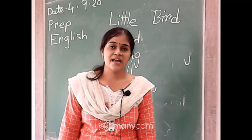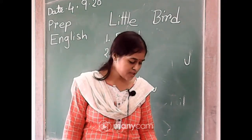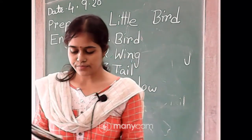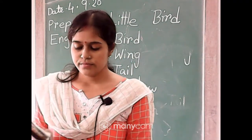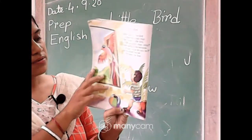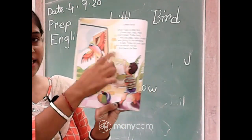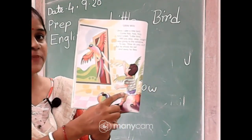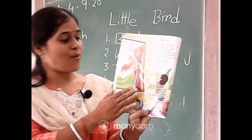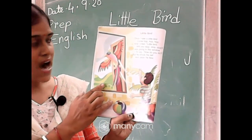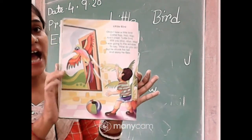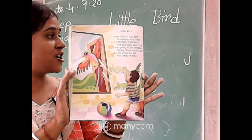The bird flew away. Okay — you learn this rhyme. Now you just tell me the objects that you can see or identify from this picture. Write down on the chat box, one by one, the objects that you can identify from this picture.